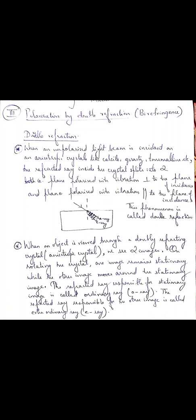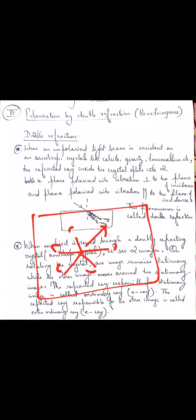Next, what we are going to learn is some of the differences between ordinary and extraordinary rays. The first difference is that ordinary and extraordinary rays are both plane polarized, but the ordinary ray has its vibrations perpendicular to the plane of incidence and the extraordinary ray has its vibrations parallel to the plane of incidence. The second point of difference is that the ordinary ray propagates with the same velocity in all directions inside a crystal, whereas the extraordinary ray moves with different velocities in different directions.